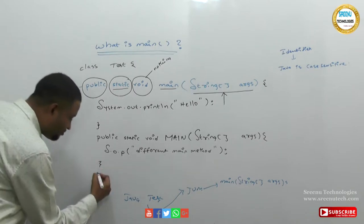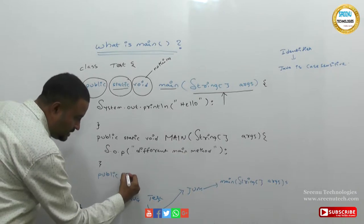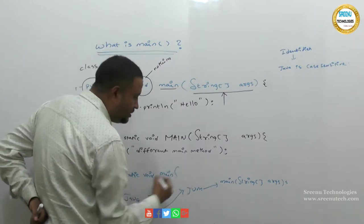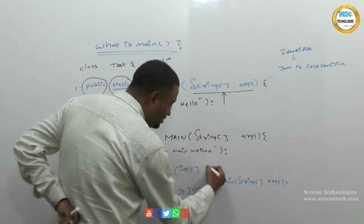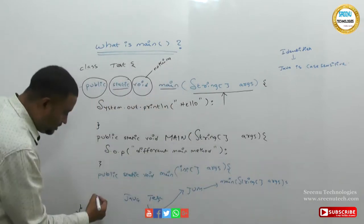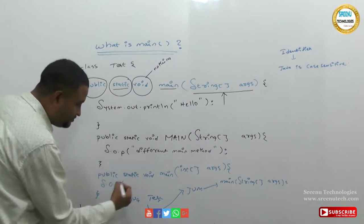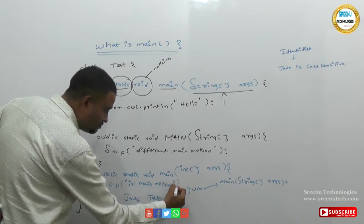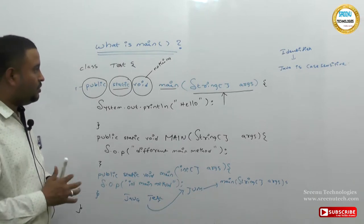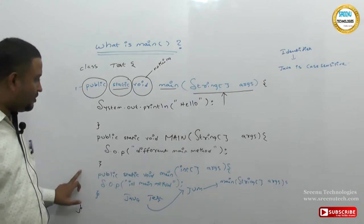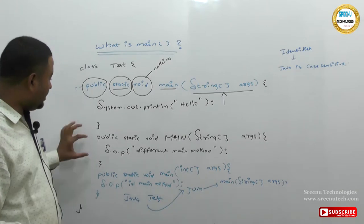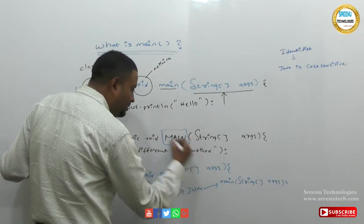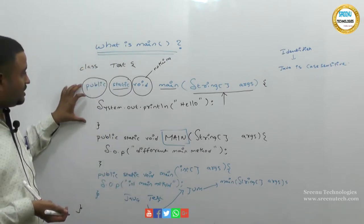I am taking one more main method: public static void main, but with a different argument — an int array args. In this I am printing System.out.println 'int main method'. So I have three main methods: one takes a string array, one takes an integer array, and another one is different because its case is different — it is completely uppercase.